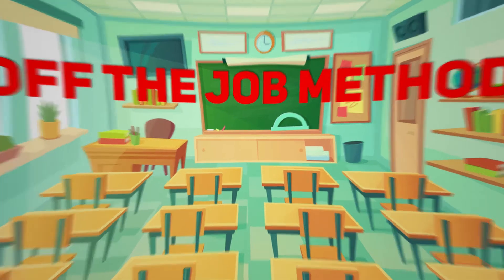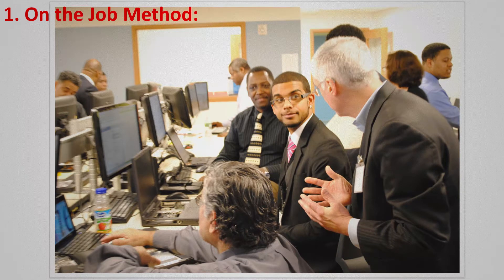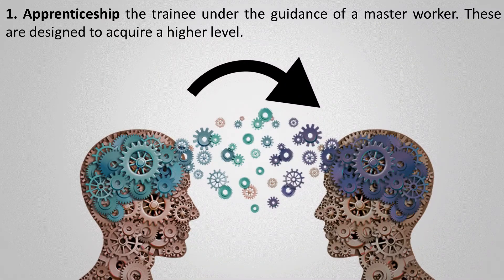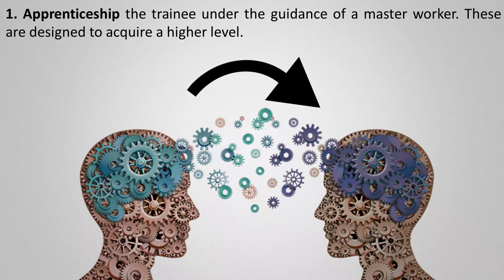In on the job method, the first method is apprenticeship training. In apprenticeship training, the trainee is put under the guidance of a master worker. This kind of training is designed to acquire a higher level of knowledge, and those seeking to enter a skilled job — such as a plumber or electrician — are often required to undergo apprenticeship. Apprentices spend a minimum amount of time to practice and gain experience from the trainer.